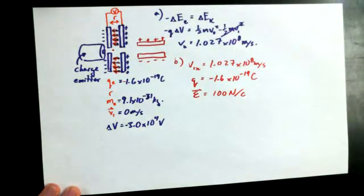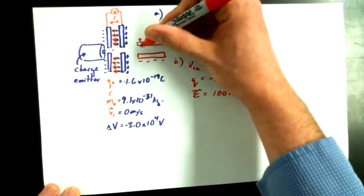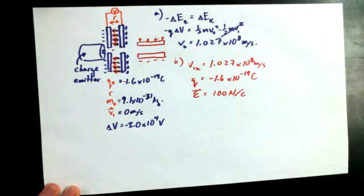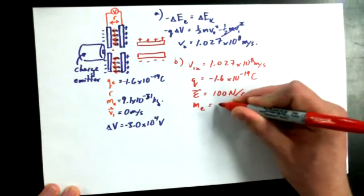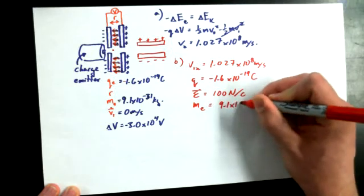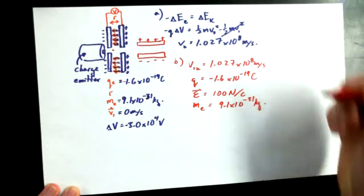And I'm not going to clutter up the writing with what direction that is, because we can see that the field within these plates would be from positive to negative, oriented downwards. And the mass of the charge isn't going to change again. It's 9.1 times 10 to the negative 31 kilograms once again. Okay, so nothing new there.